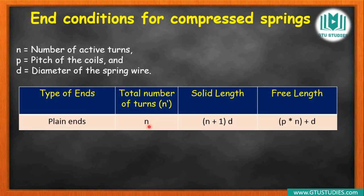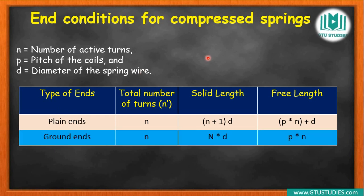Free length is given by: p into n plus diameter of wire — this equation must be remembered. Whenever you are doing any end condition calculation, this equation must not be forgotten. To find solid length and free length, you must recognize which end condition the spring is made from, and then use the corresponding equation. For ground ends, total number of coils is n, solid length is n into d.